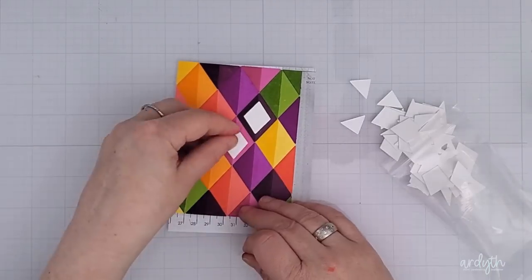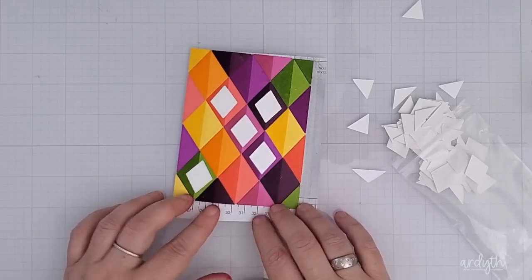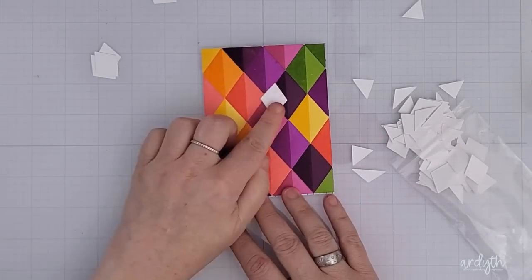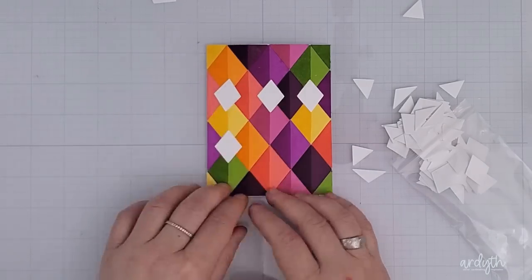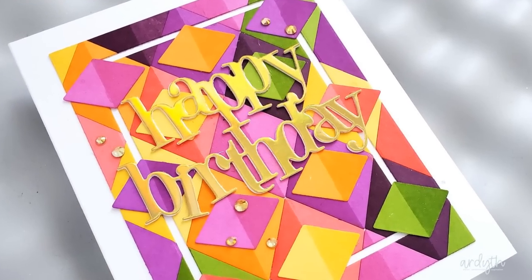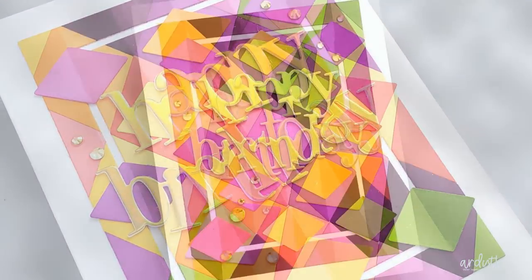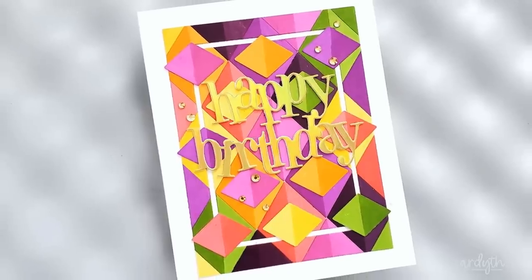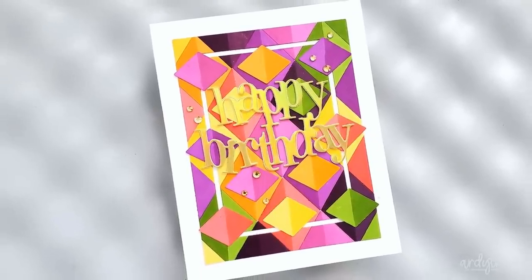Then I started playing with the smaller diamond offcuts from the other panel. Again, there are so many ways you could use them depending on how you want to place them, how many of them you want to use, and whether you want to leave them white or add some color. I ended up adding color to them and I placed them sideways across the center of the larger diamonds. I think this has a really fun mid-century modern look with a modern color palette. I cut a negative rectangle frame from the background panel and I added a stacked up die cut sentiment and gems.